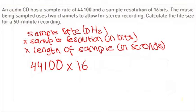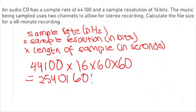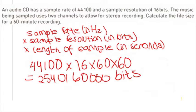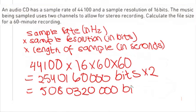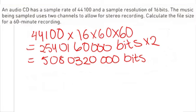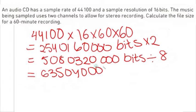It says in the question that the length of sample is 60 minutes, but we need to convert that to seconds. In order to do that, we would multiply 60 by 60. And thus, our answer would be 254016000 bits. Now, since this is a stereo recording, we would multiply the result by 2. Also, it says it uses two channels, so we know that we need to multiply that by 2. Multiplying by 2 gives us the answer 5080320000 bits. Now, we need to convert these bits into bytes, so we divide this by 8, and we will get the answer 635040000.